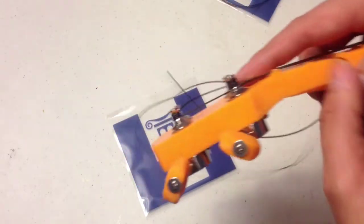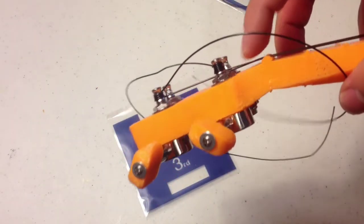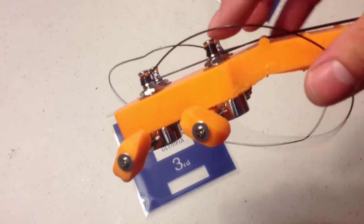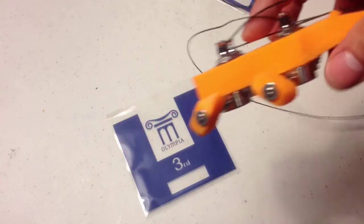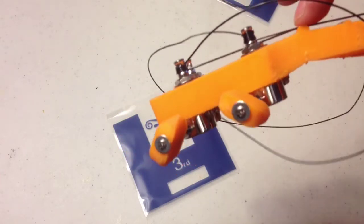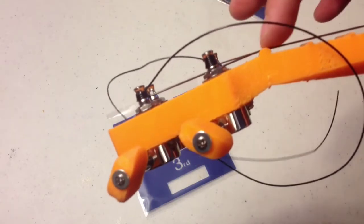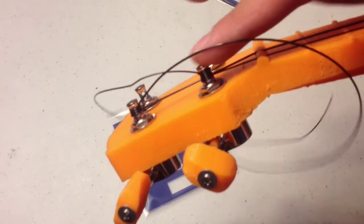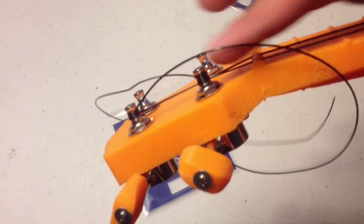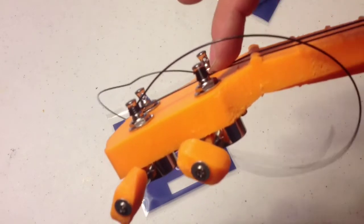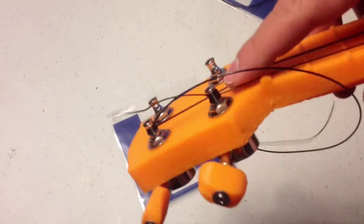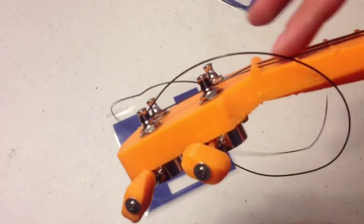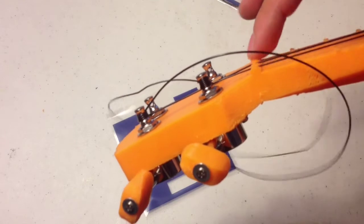Alright, so one thing I wanted to point out - see how the string goes to the bottom of the post? It's not up here, it's at the bottom. And you want that because it creates more tension on the bridge. If you have it posted up here, it won't hit this. So make sure you hold it down, like you've been seeing me do, so the string ends at the bottom and catches at the bridge.